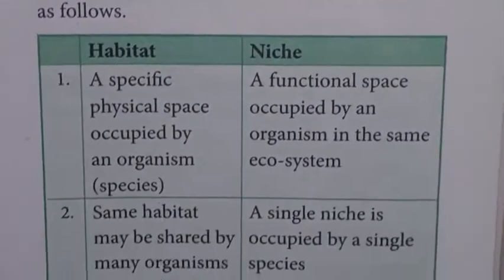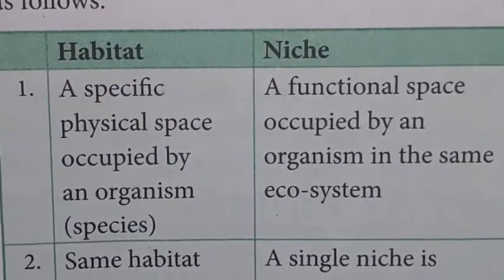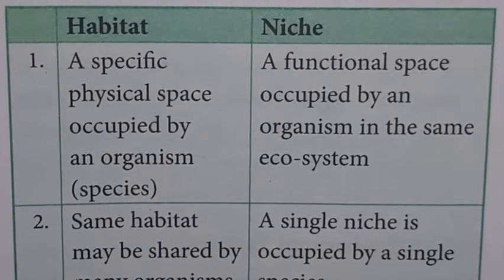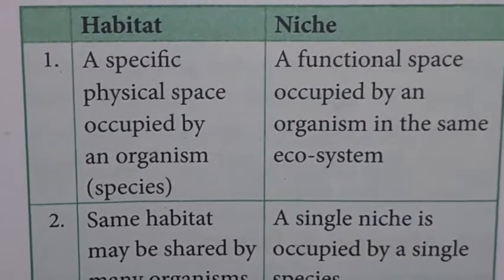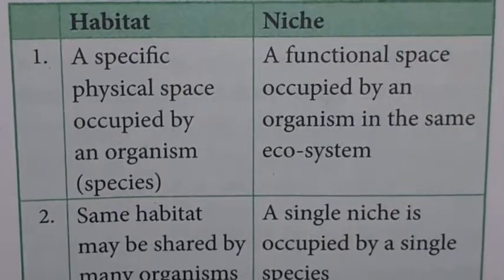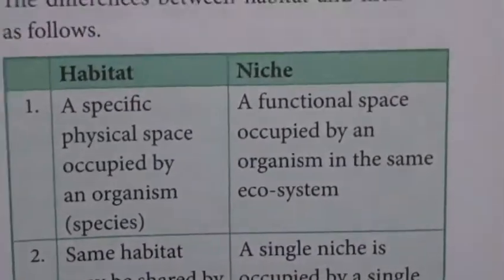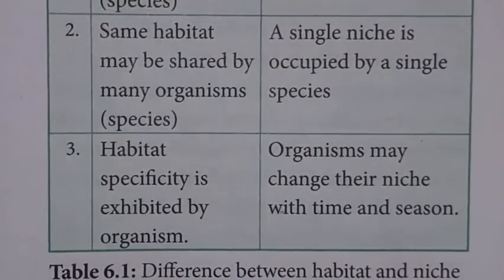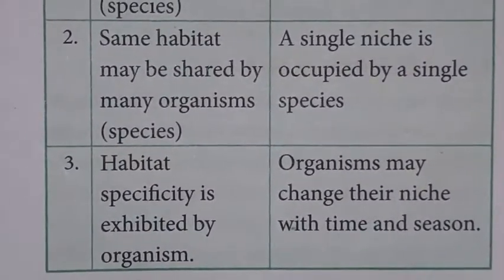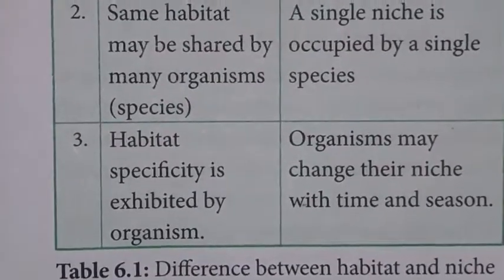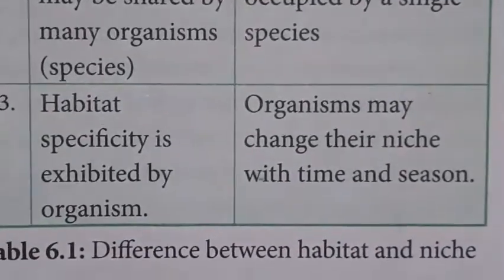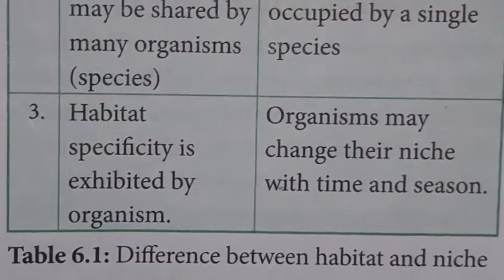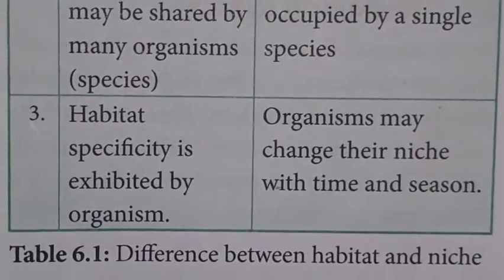Differences between habitat and niche: Habitat is a specific physical space occupied by an organism or species. Niche is a functional space occupied by an organism in the ecosystem. The same habitat may be shared by many organisms, while a single niche is occupied by a single species. Habitat specificity is established by the organism, whereas an organism may change its niche with time and season.